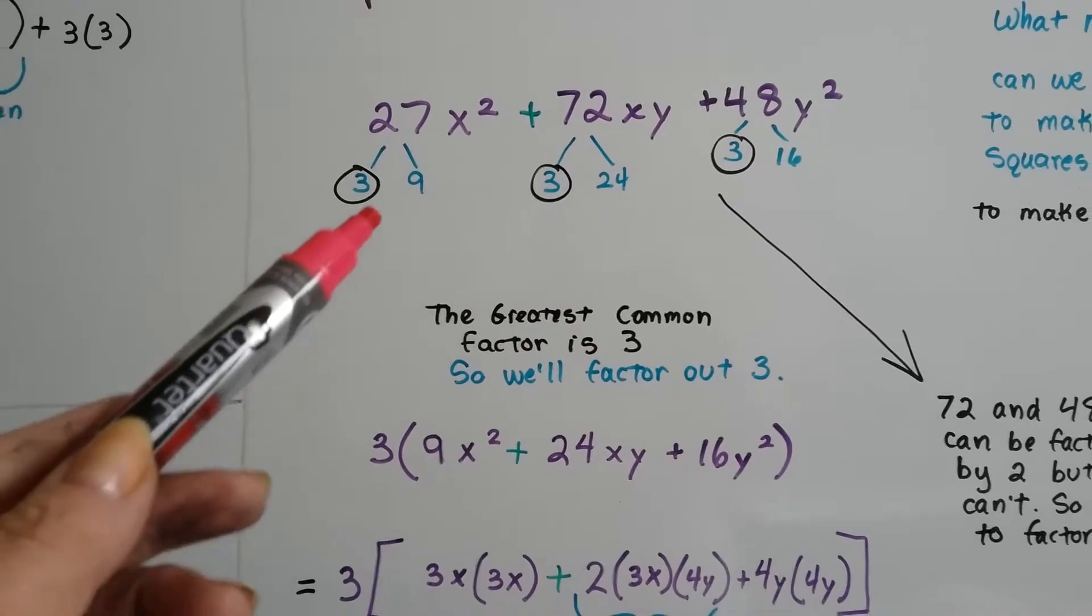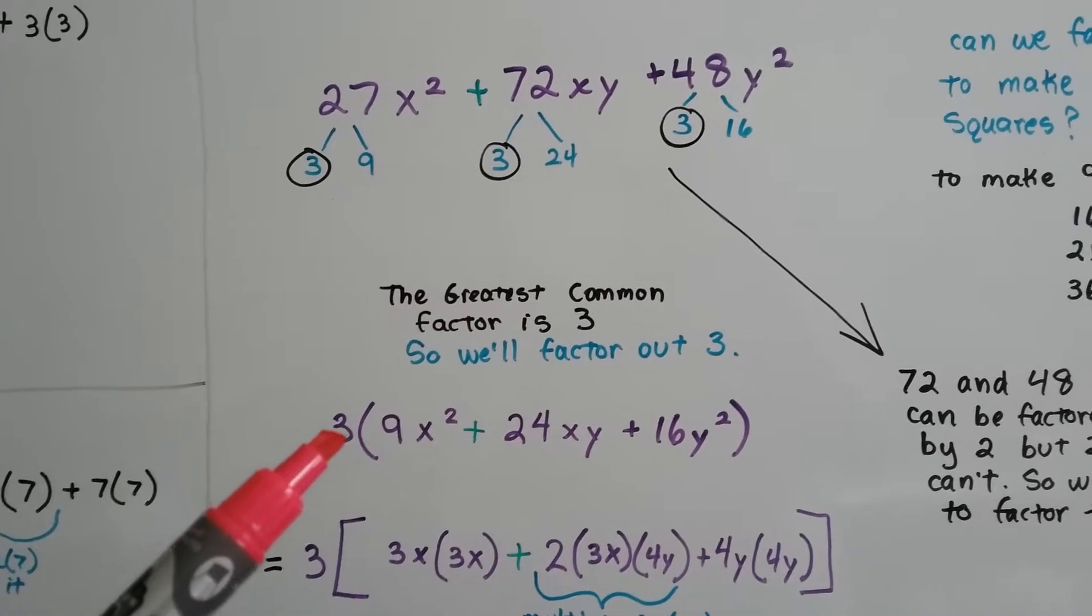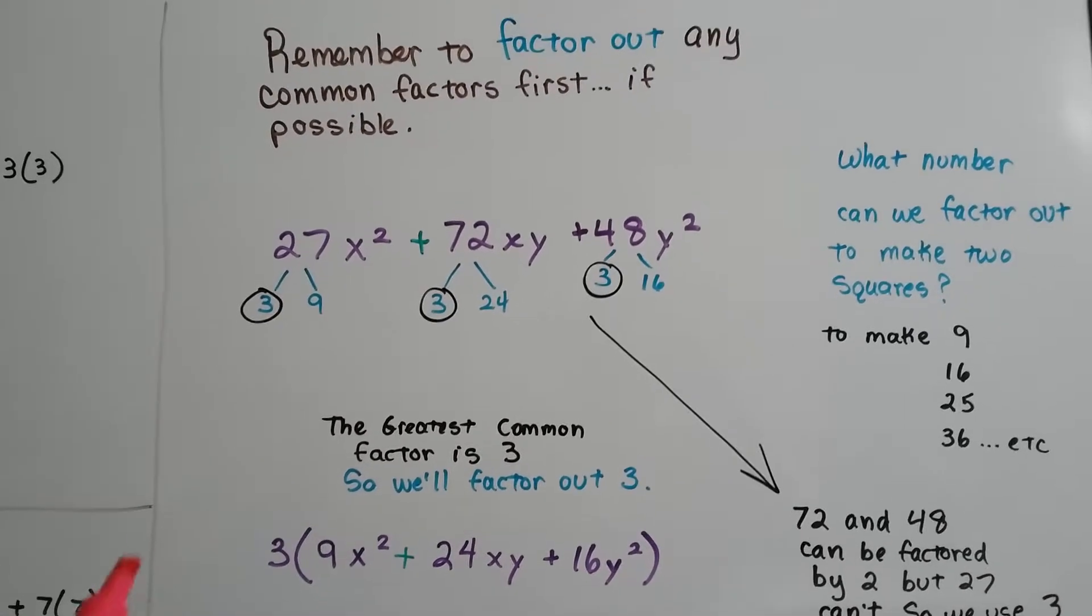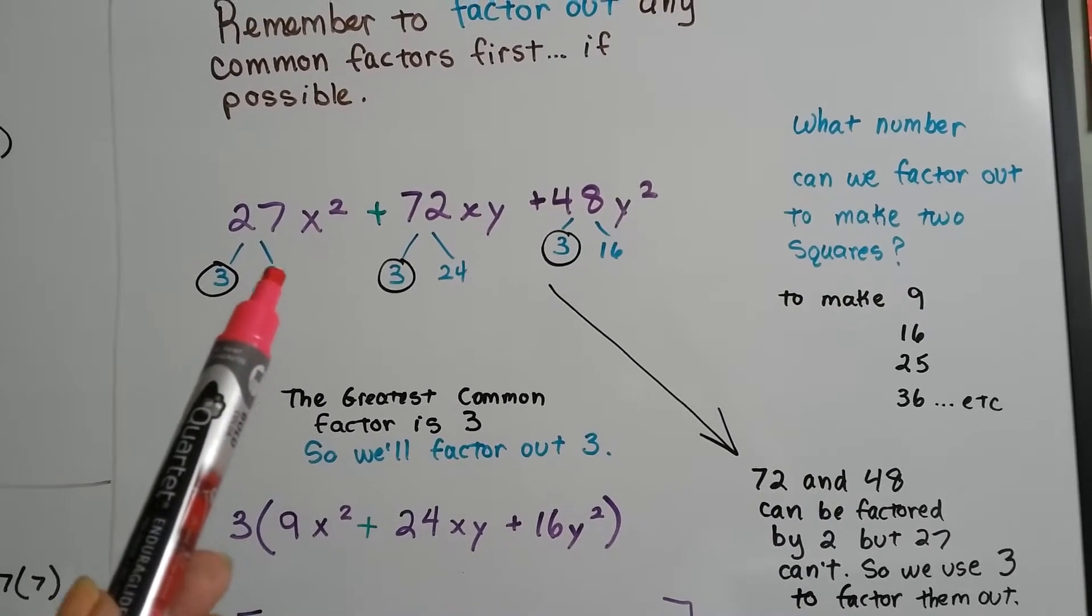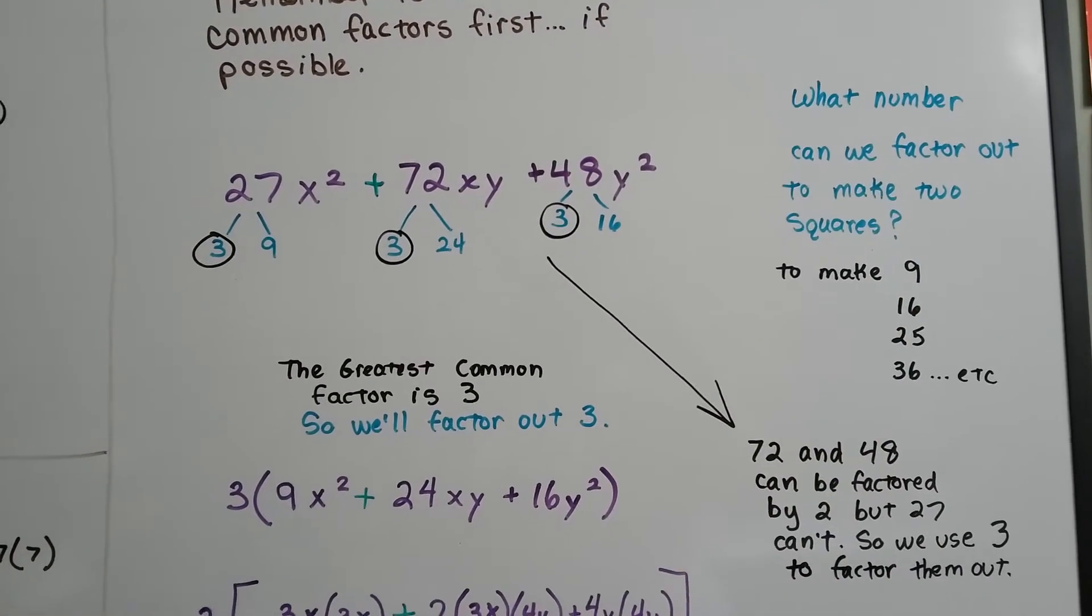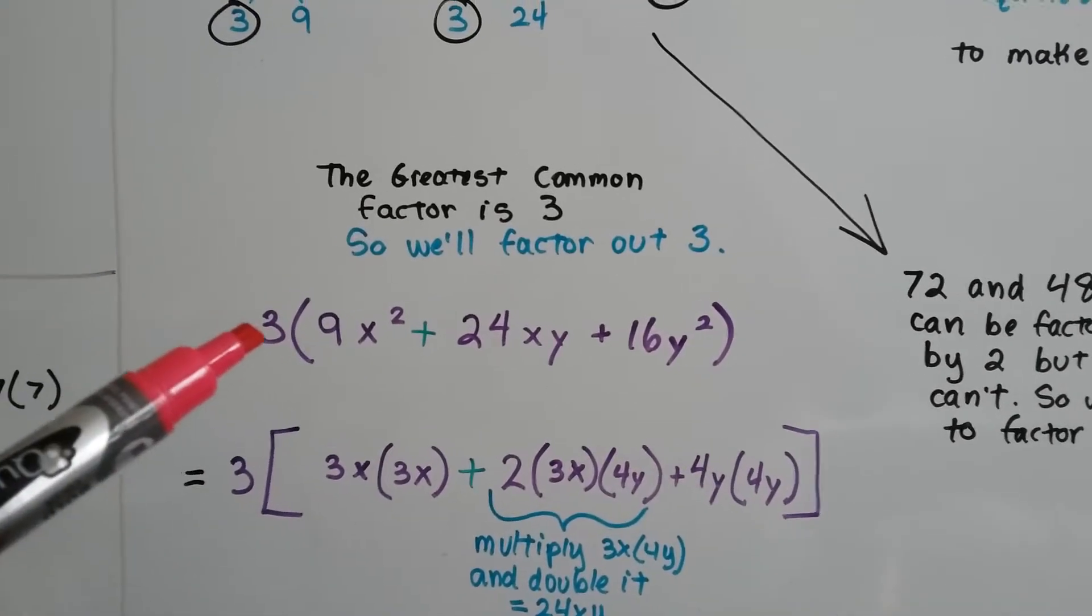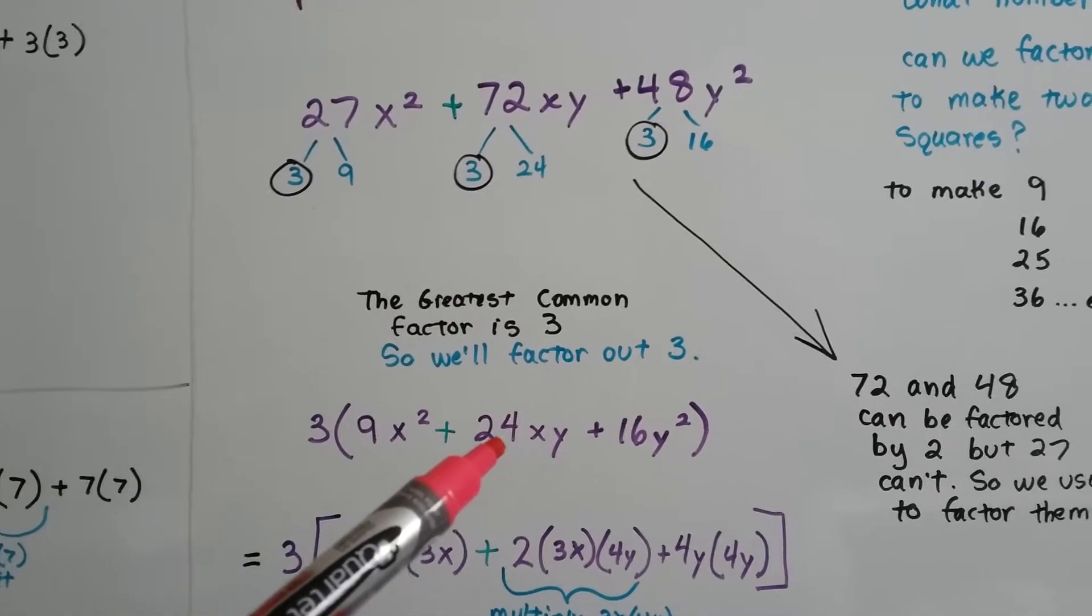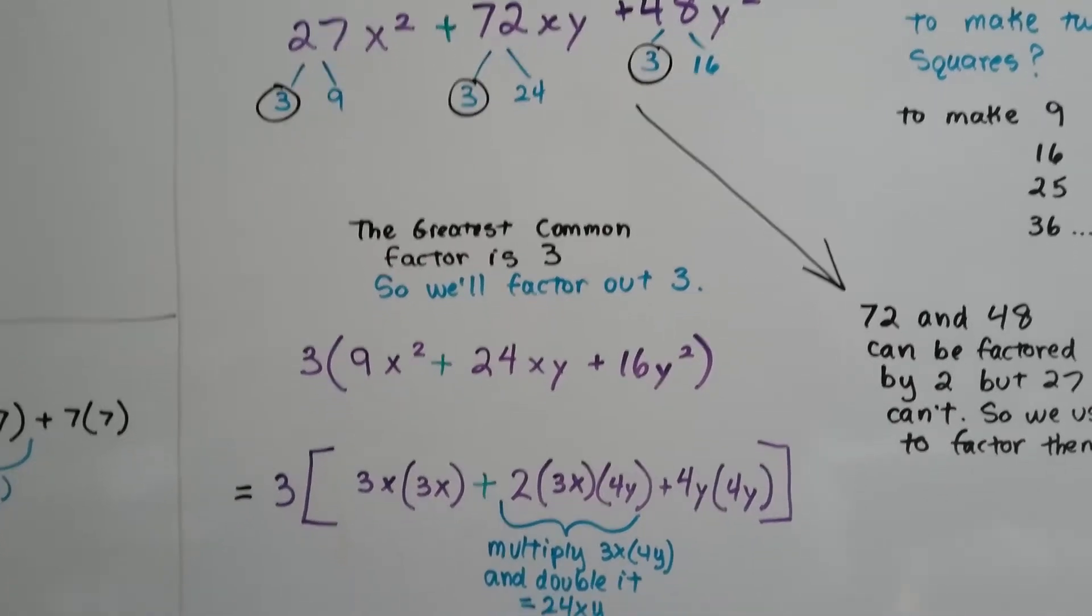So we've already got our numbers right here. See that? 9, 24, and 16. So we've got 3 on the outside of the parentheses, because it's factored out. And just remember, you ask yourself, what number can we factor out to make squares? And this is a square, and that's a square. Because you want to make like a 9, a 16, a 25, you know, and so on. So now we've got 3 on the outside of the parentheses, and we've got 9x² + 24xy + 16y². And the 3 has been factored out.